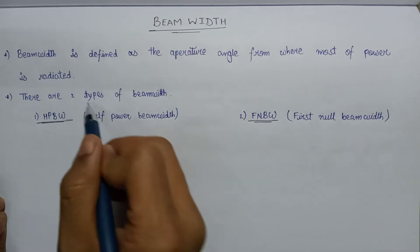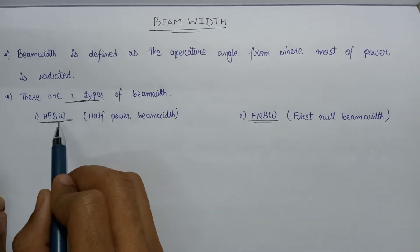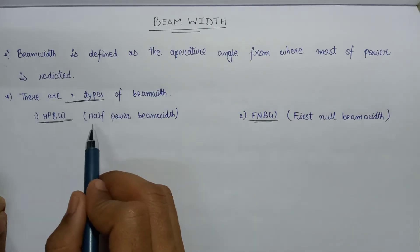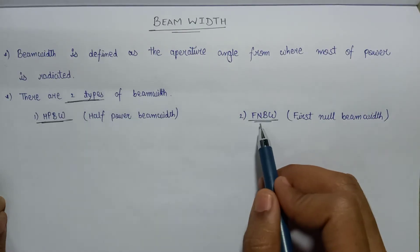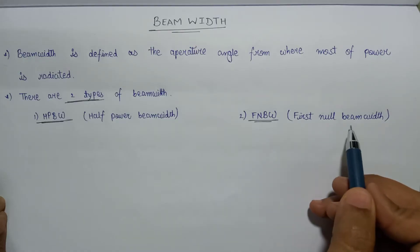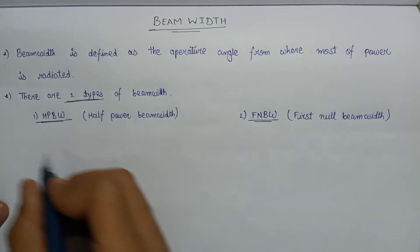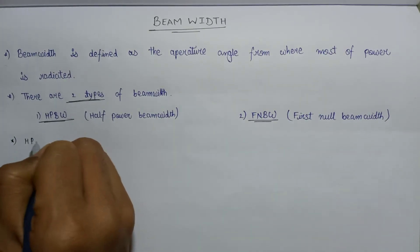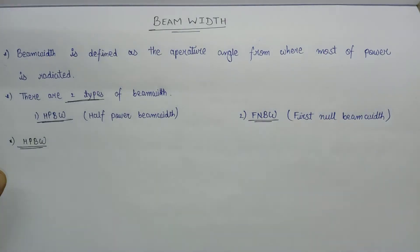If we talk about the types of beam width, then basically there are two types: HPBW and FNBW. HPBW stands for half power beam width, whereas FNBW stands for first null beam width. Now let's discuss about these two types separately.